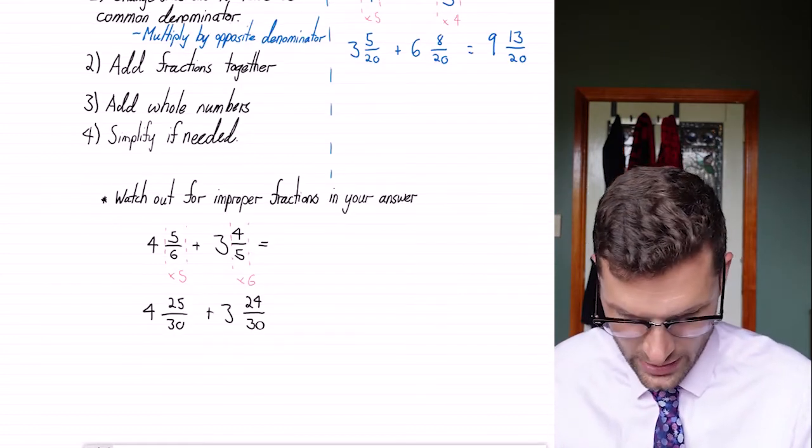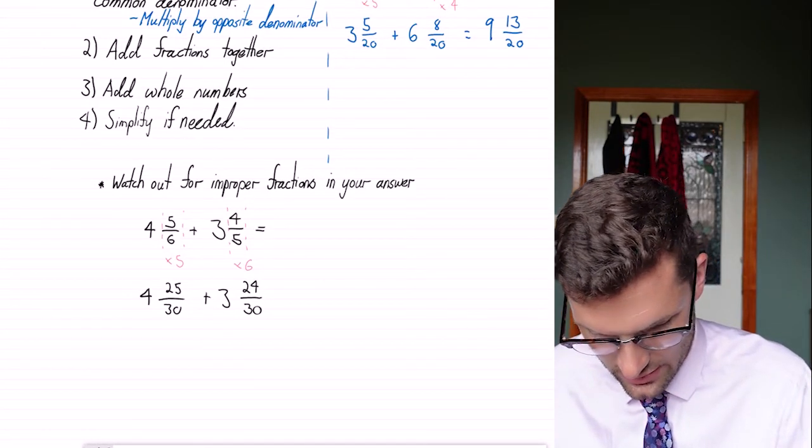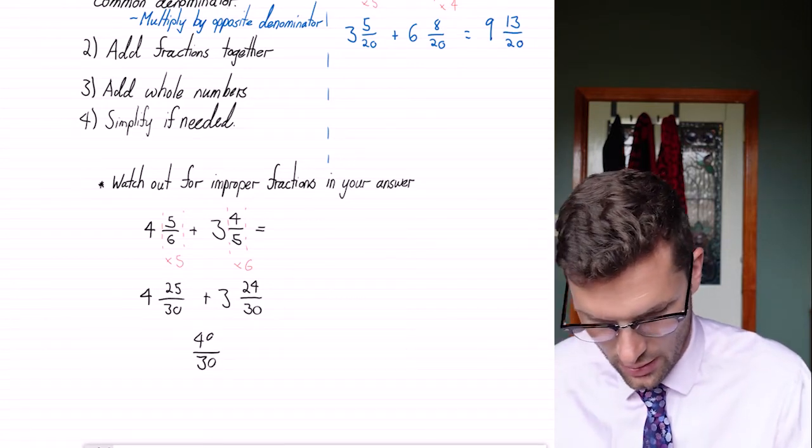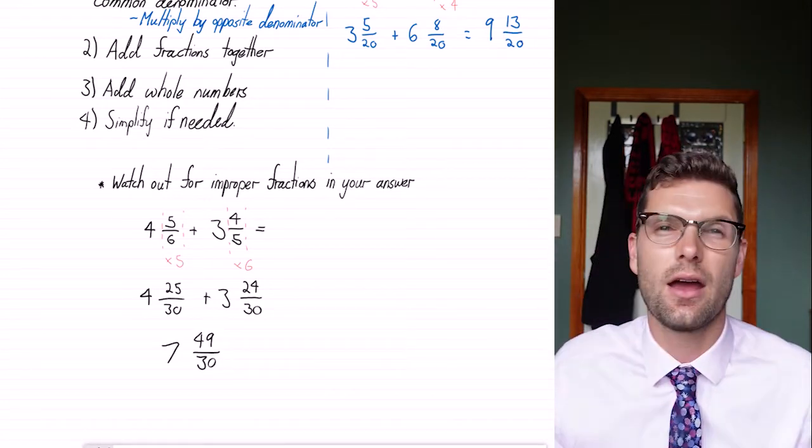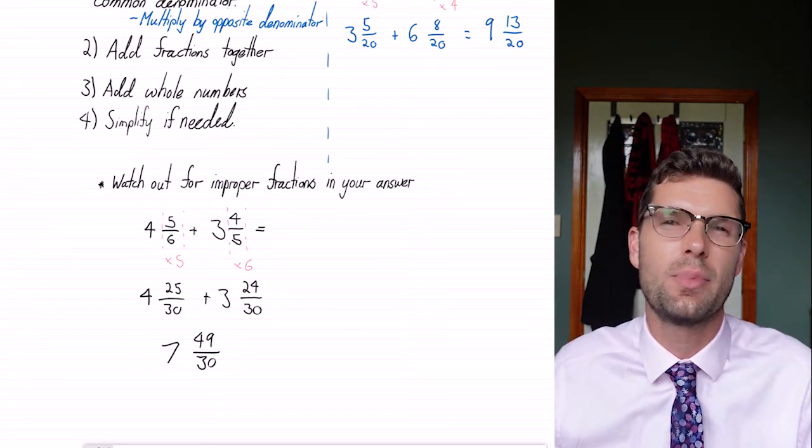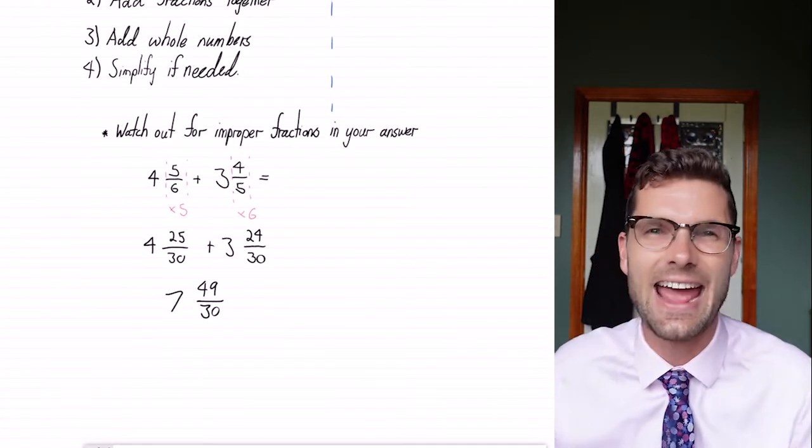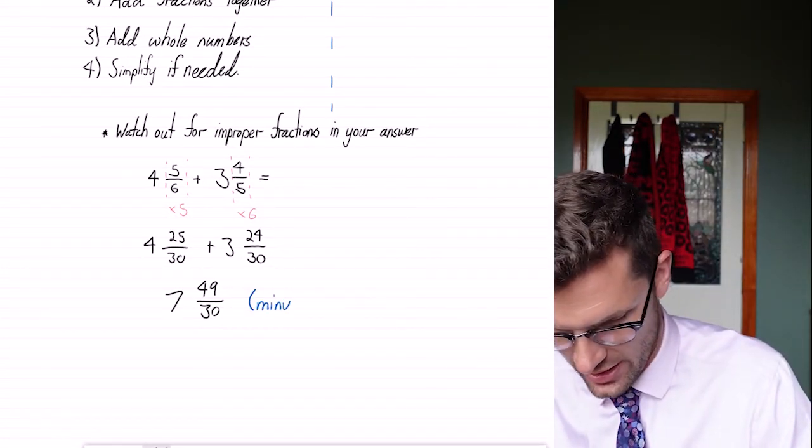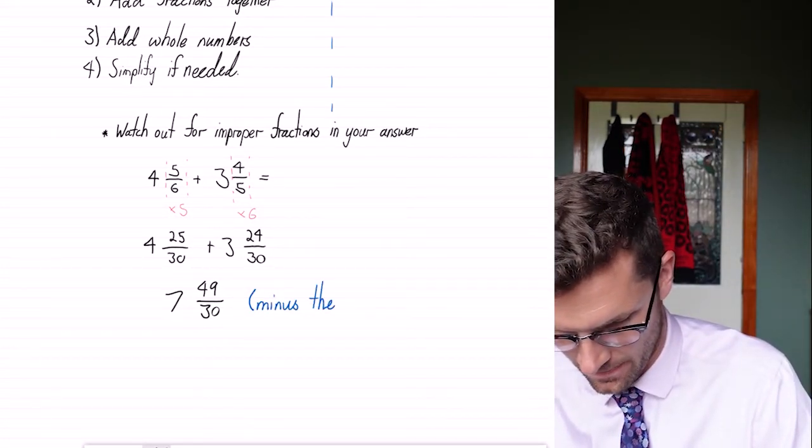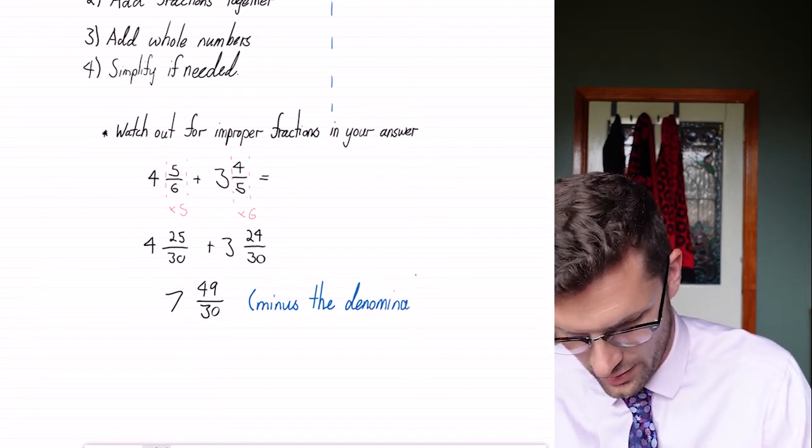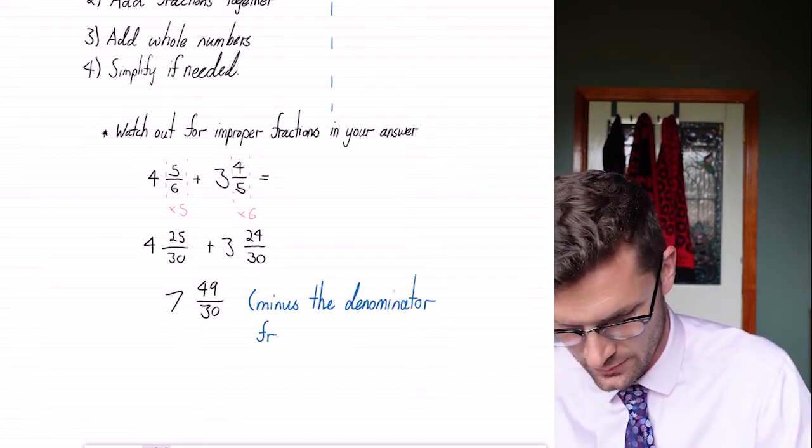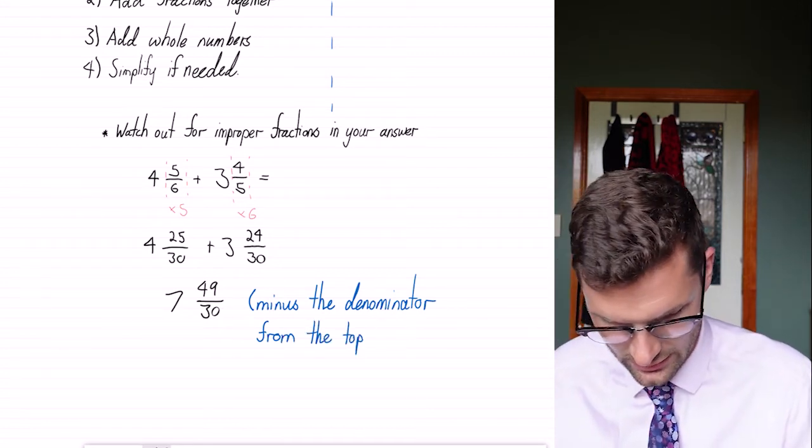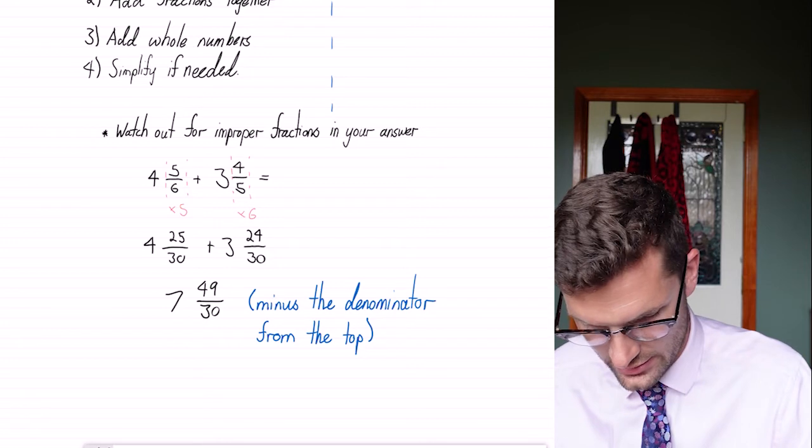This here, we add our denominators like we did in the last example. So we've got seven and 49 over 30. Because that's an improper fraction, we can take out one whole minus the denominator from the numerator. And so that leads us to have 19 over 30.